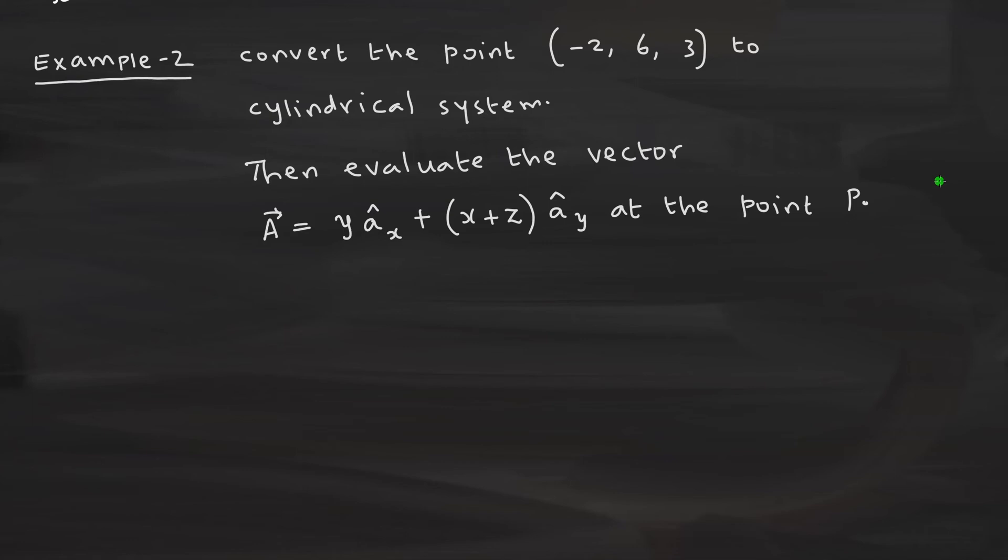This is the example 2. Till now, we have seen a first example where how to represent a point in a coordinate system. The second example is now that you know already how to represent a point and how to represent a vector. The question is now convert the point from one coordinate system to the other. And similarly, you convert a particular vector from one coordinate system to the other.